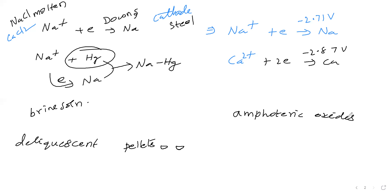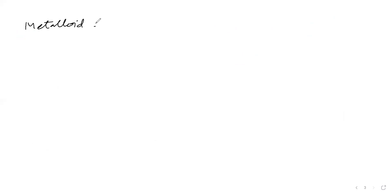Which are metalloids? In the periodic table, you take the period number and add one to get the group number of the metalloid. Period 2 + 1 = Group 3 → Boron. Period 3 + 1 = Group 4 → Silicon. Period 4 + 1 = Group 5 → Arsenic. Period 5 + 1 = Group 6 → Antimony/Tellurium. Period 6 + 1 = Group 7 → Iodine (halogen family).